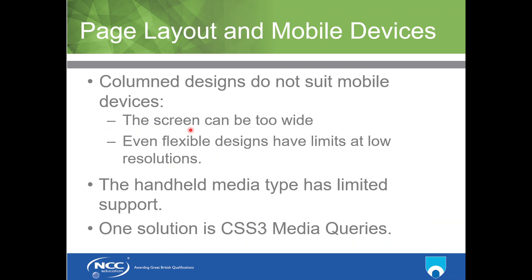Column designs do not suit mobile devices for two main reasons. The screen may be too narrow, forcing users to scroll horizontally. Even flexible designs have limits at very low resolutions — for example feature phones with 512 pixels or below. To handle this problem, we use CSS3 media queries, which check the type or size of the screen and apply different CSS rules depending on the screen size.